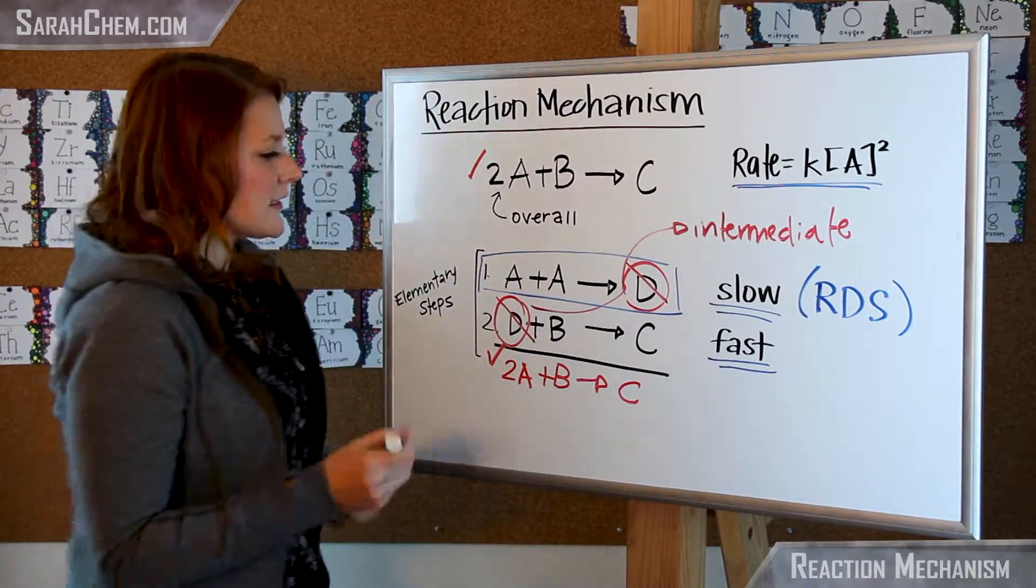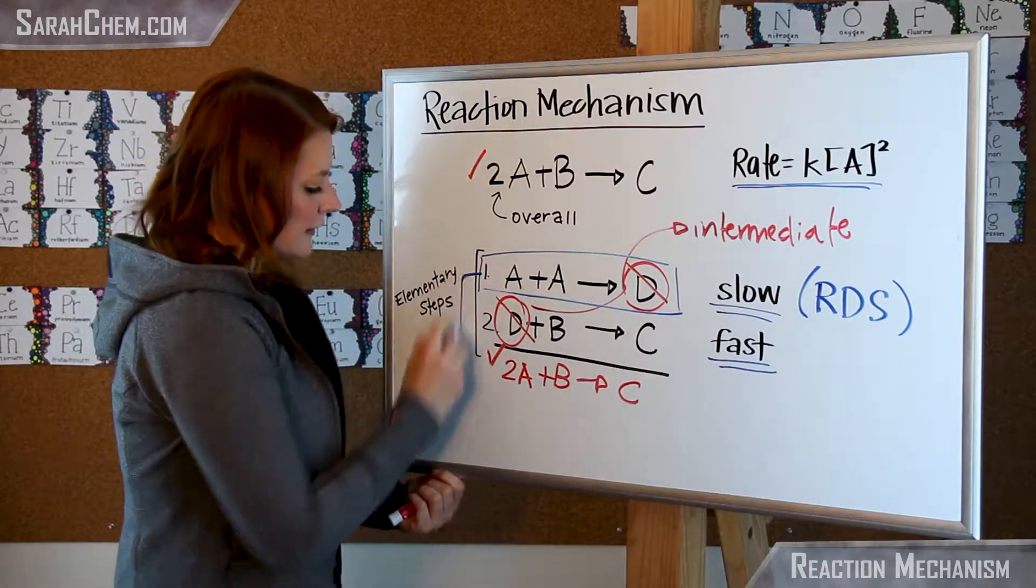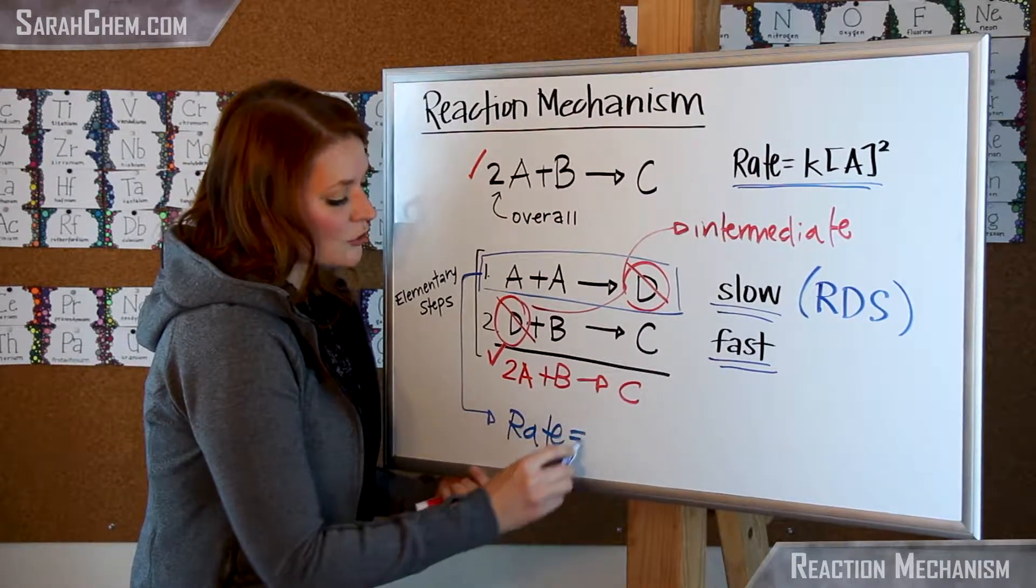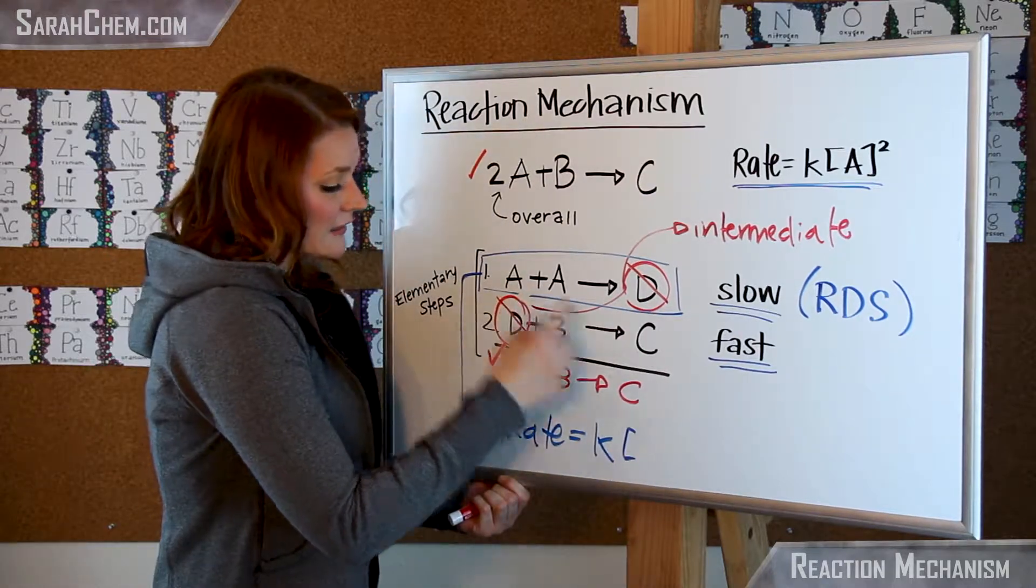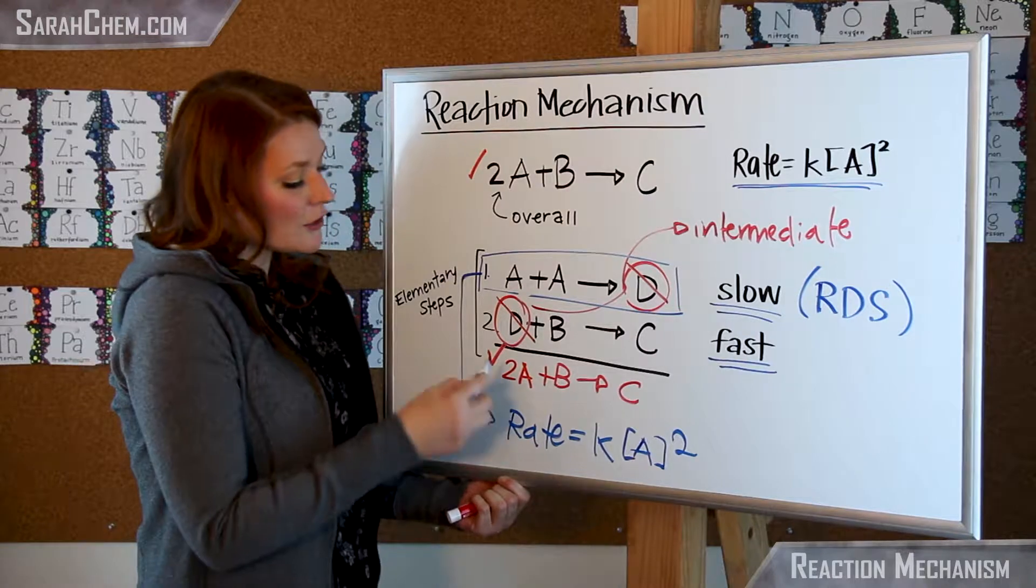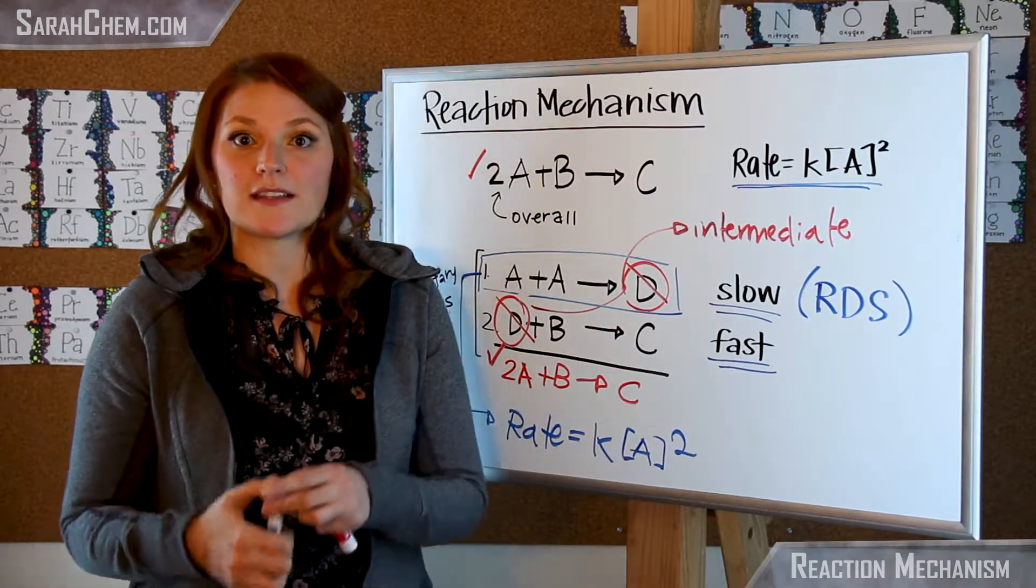So what that means is, I know that this one here is my rate determining step. So what I'm going to say then is based on this mechanism, my rate is equal to k, the rate constant, times - so now my only reactant that I have is A, and there are two of them, so it would be squared.